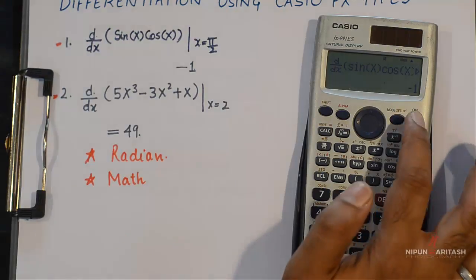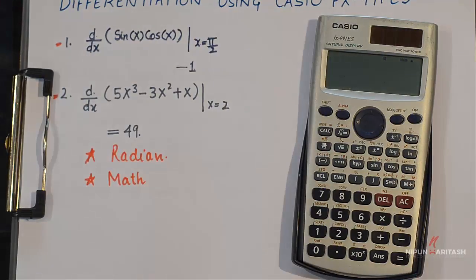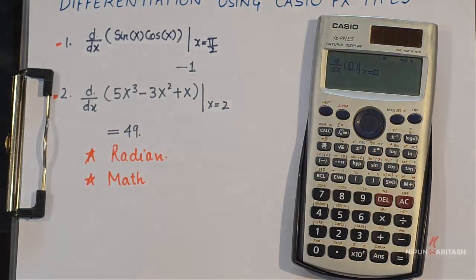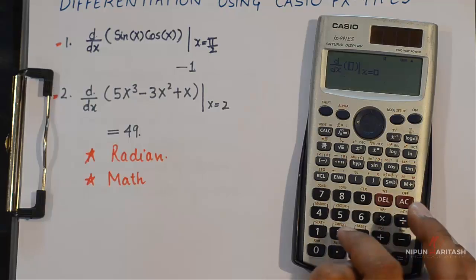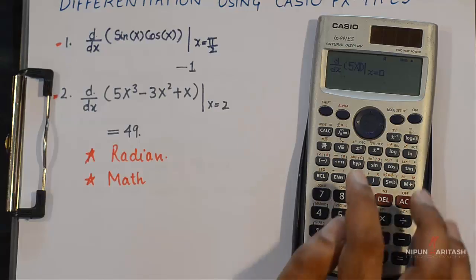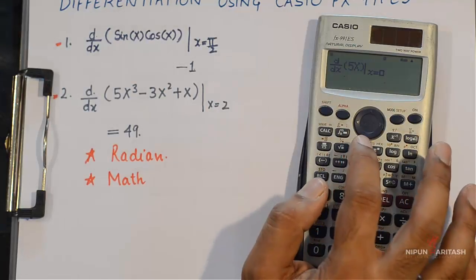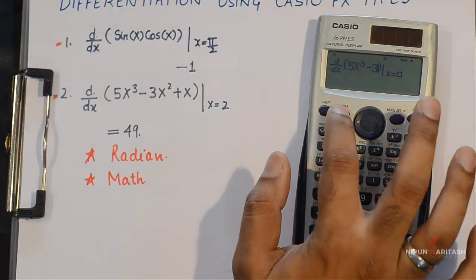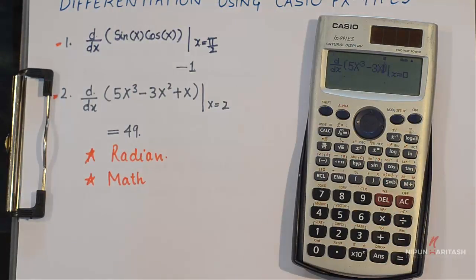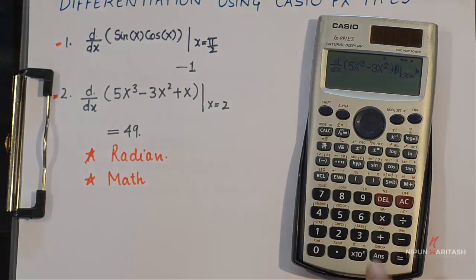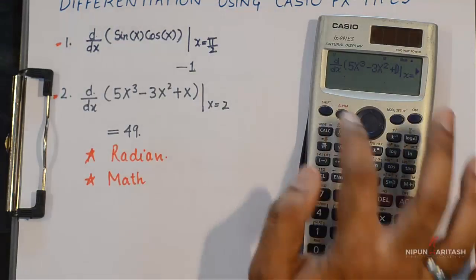Now we do the differentiation of an algebraic function. For that we go to shift d by dx and we'll write down 5x. For cube we'll use this button then minus 3 alpha then we get an x then square then just an x.